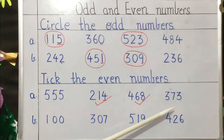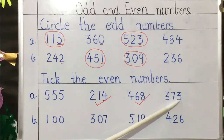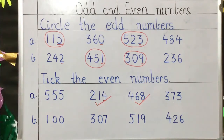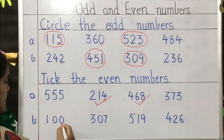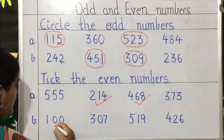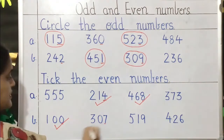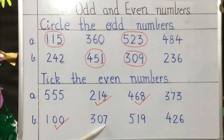The next number is 373. The last digit is 3. A number ending with 3 will be an odd number, so we will leave this. The next number is 100 — it is ending with 0, and a number ending with 0 is an even number — so we will tick this. The next number is 307 — the last digit is 7 — a number ending with 7 is an odd number, so we will leave this.